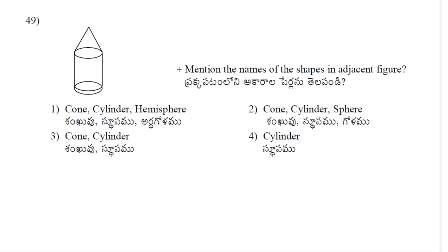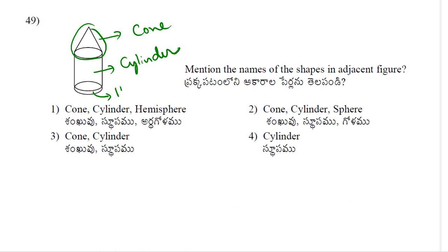49th problem: Mention the names of the shapes in the adjacent figure. The shapes are: cone on top, cylinder in the middle, and hemisphere at the bottom. So option 1 is correct.